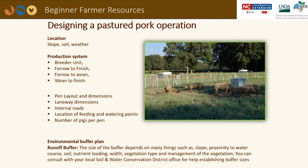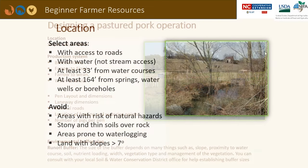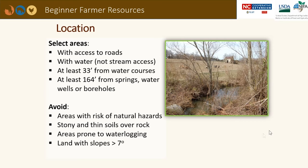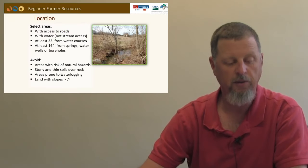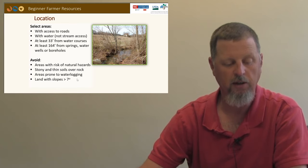The steeper the slope and the more sensitive the soil type, the larger this buffer should be. In selecting location, select areas that have access to roads and access to water, but not stream access, because hogs can wreak havoc on stream banks. You need to avoid areas of natural hazards such as stony or thin soils over rock, areas prone to water logging or flooding, and lands with a slope greater than 7 degrees.